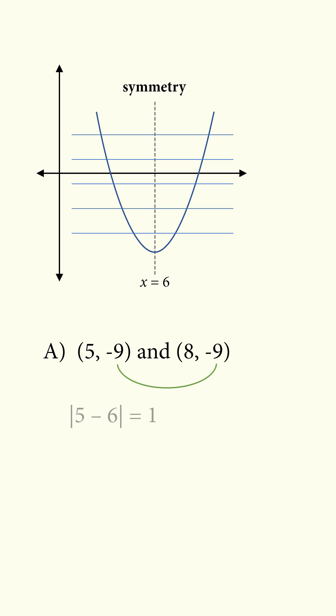In answer choice A, the pairs of points have the same y coordinates, but their x coordinates have different distances to x = 6. So this is wrong.